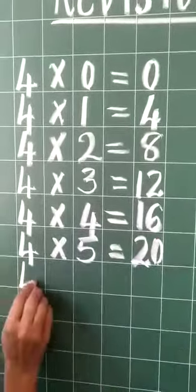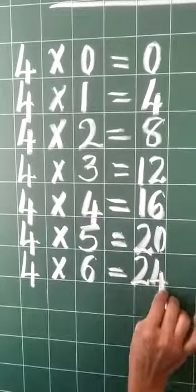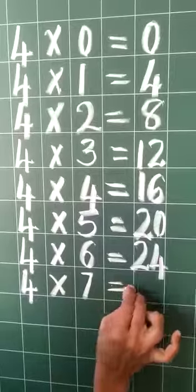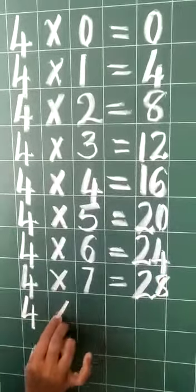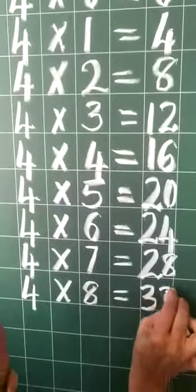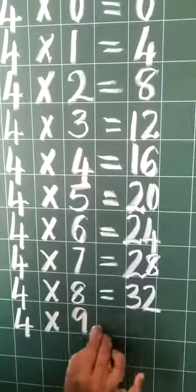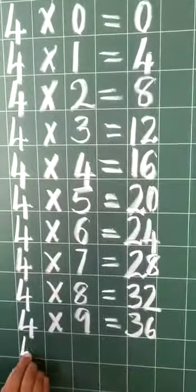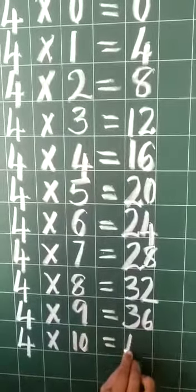4 times 6 equals 24. 4 times 7 equals 28. 4 eights are 32. 4 nines are 36. 4 tens are 40.